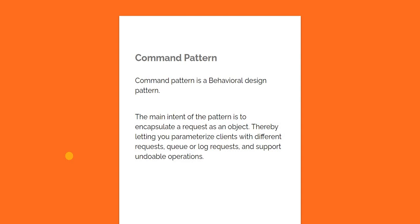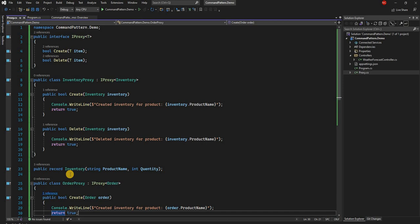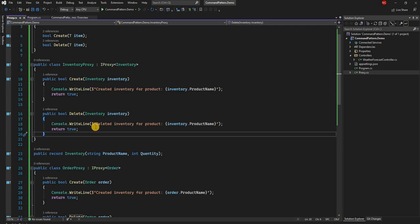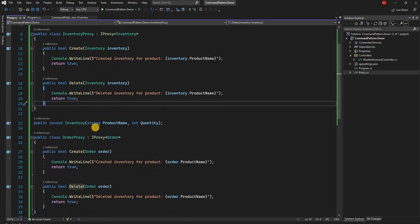From the definition it's not very clear what it means. The command pattern mainly helps decouple the invoker of a request from the receiver of the request. So let's show this through an example. In this example, let's say we are talking about a distributed system and in this distributed system we have two main services — Order and Inventory — and we have a couple of proxy classes for each.